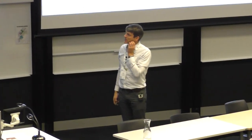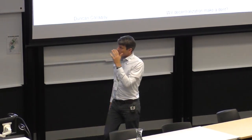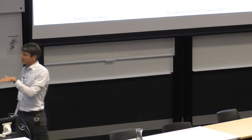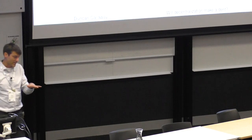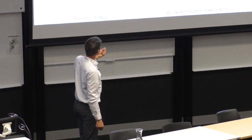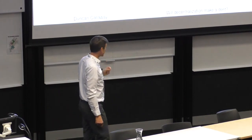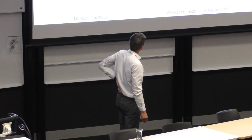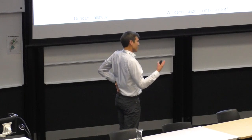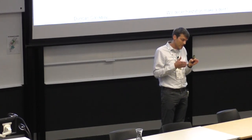Coming back to the motivating questions: how does rate design shift private economics of defection? In most of the US, equating customer volumetric cost to utility private marginal cost completely disincentivizes load defection. But grid defection becomes preferable for some low-load customers. For the second question — how do customer preferences for reliability change the decision — just a very small reduction in reliability requirements has very large effects on what customers are willing to do.